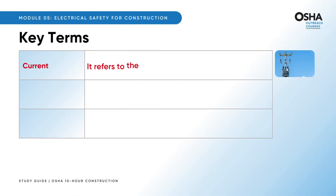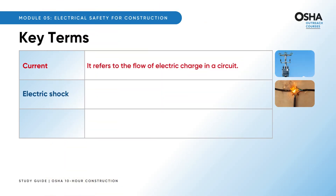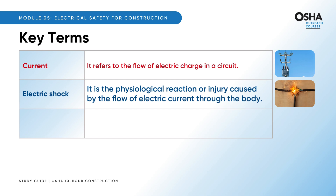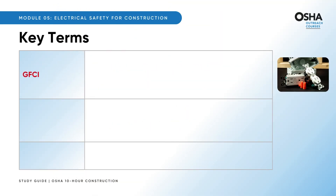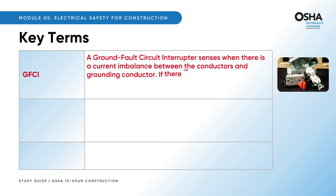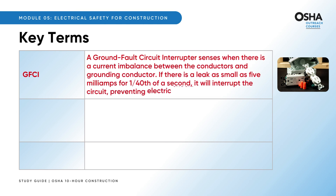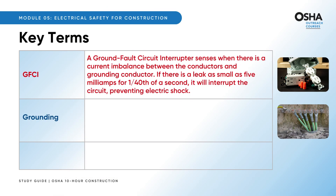Current is the flow of electric charge in a circuit — the lifeblood of electricity. Be cautious of electric shock, that jolt you really want to avoid; it's the body's reaction to an electric current flow. Electrocution is the serious outcome — what happens when an electric shock leads to the worst-case scenario. GFCI, the ground fault circuit interrupter, is the superhero preventing disasters, ready to sense even the tiniest leak in the circuit and shut it down, stopping electric shock in its tracks.